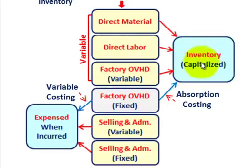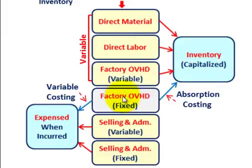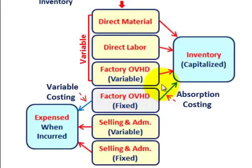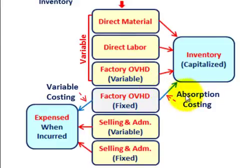With absorption costing, we add one more item. Along with direct materials, direct labor, and variable factory overhead, the fixed factory overhead is also included in inventory capitalization under absorption costing. So really, the only difference between variable and absorption costing is how we handle fixed factory overhead costs.